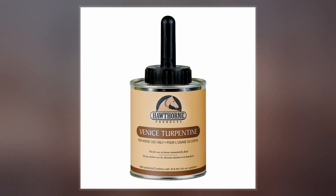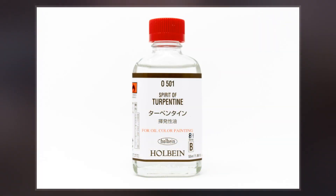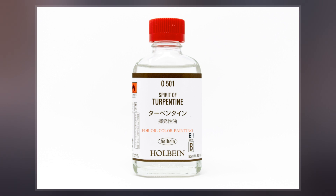Canada balsam, also called Canada turpentine or balsam of fir, is a turpentine that is made from the oleoresin of the balsam fir.